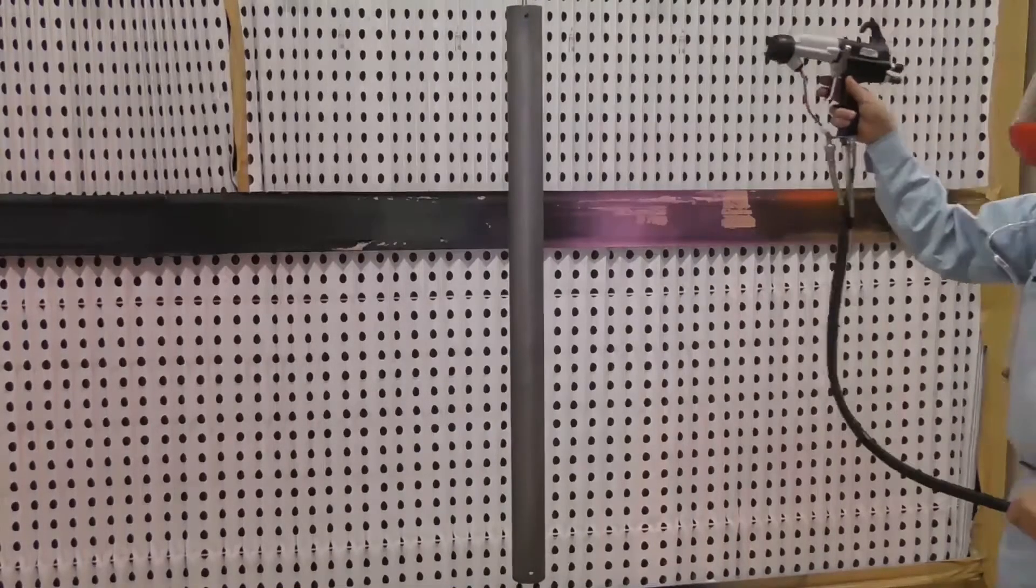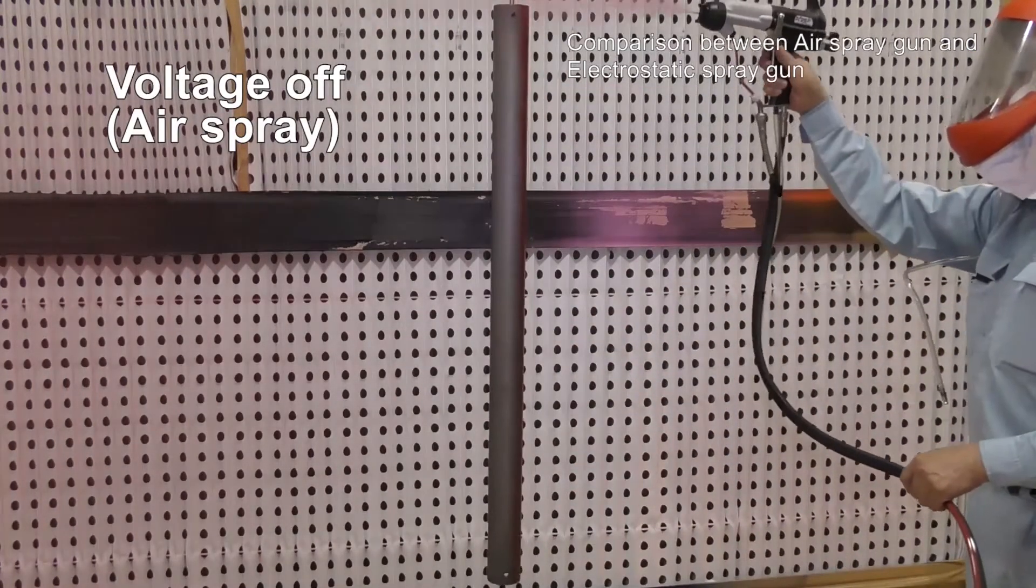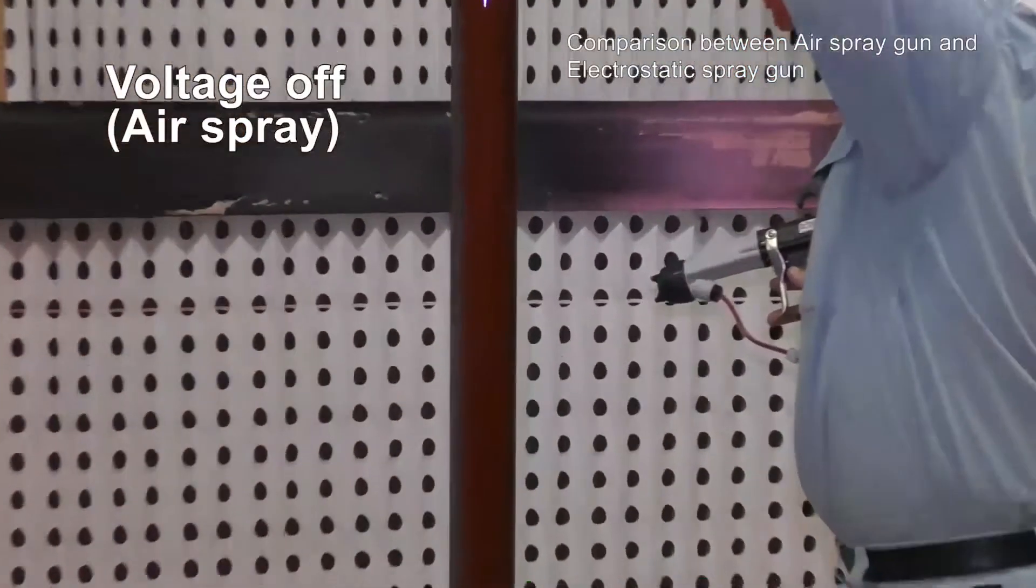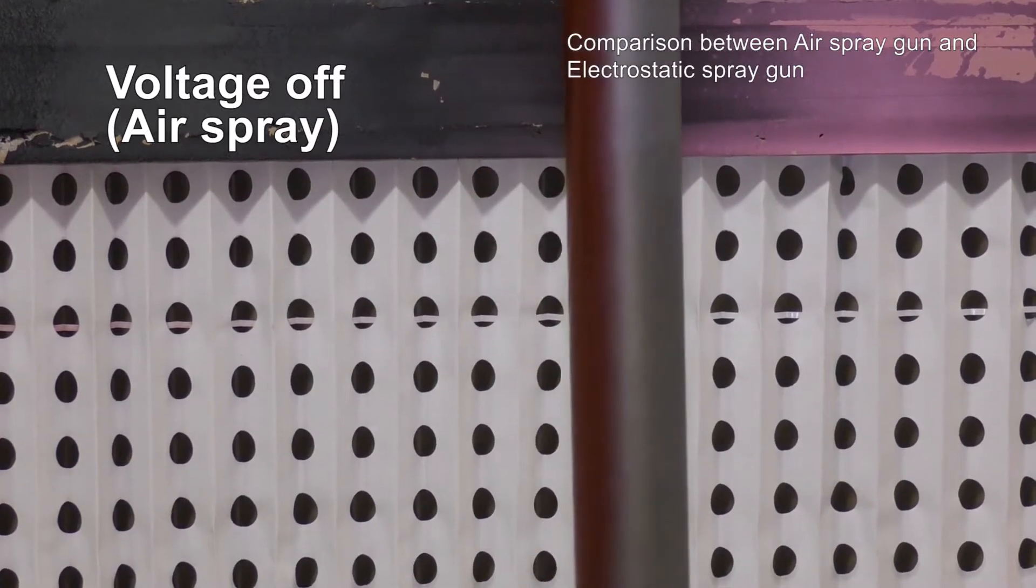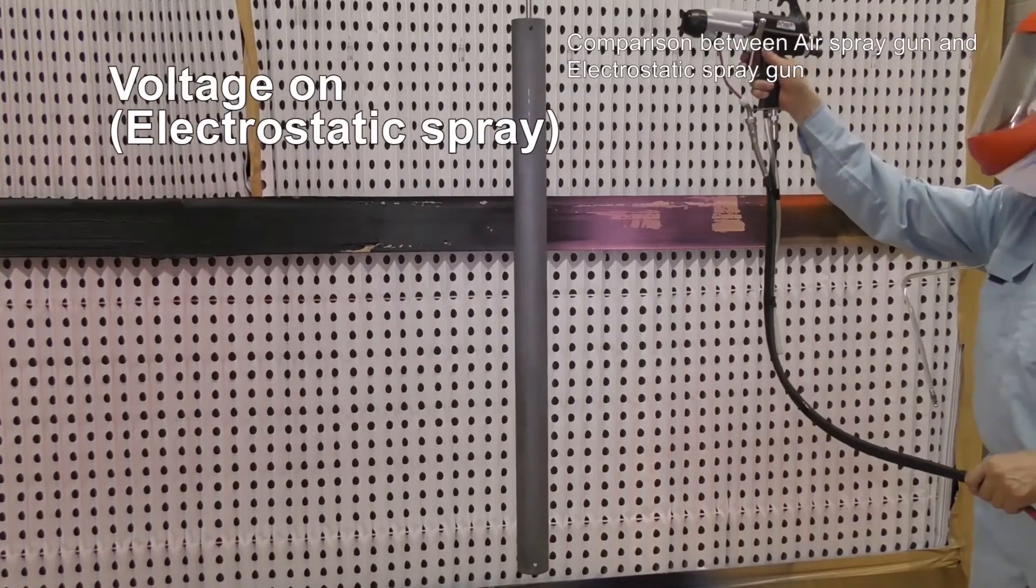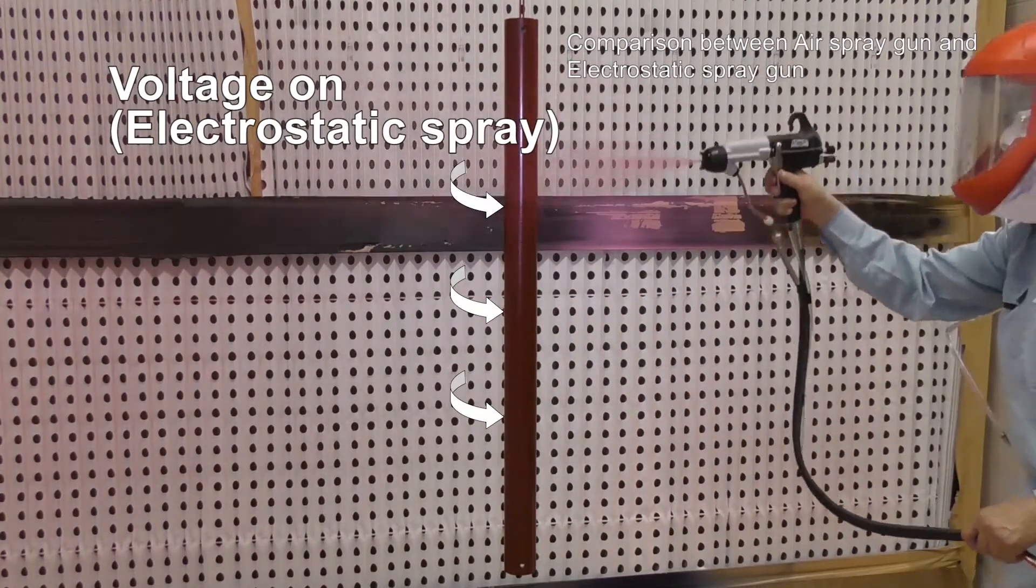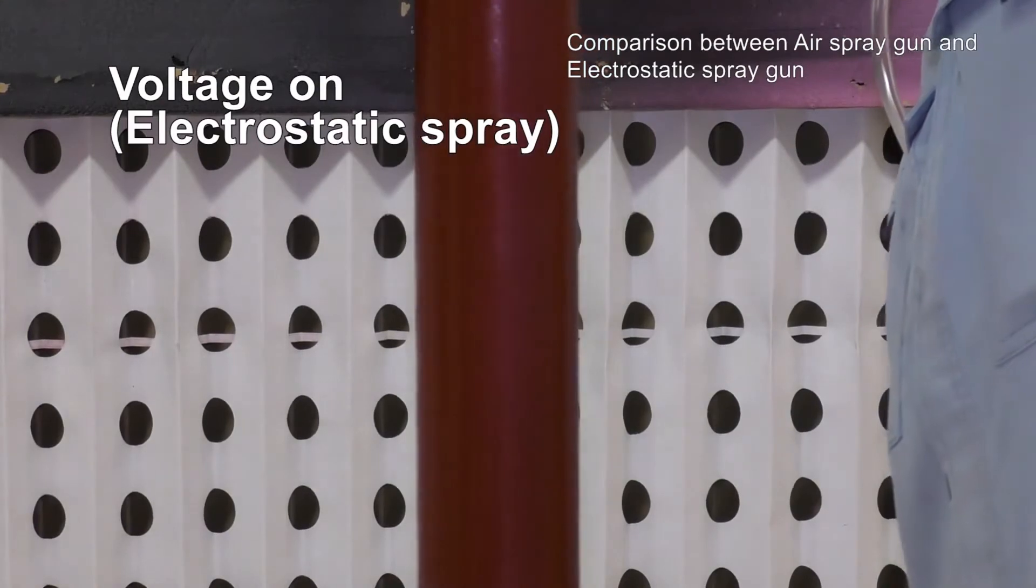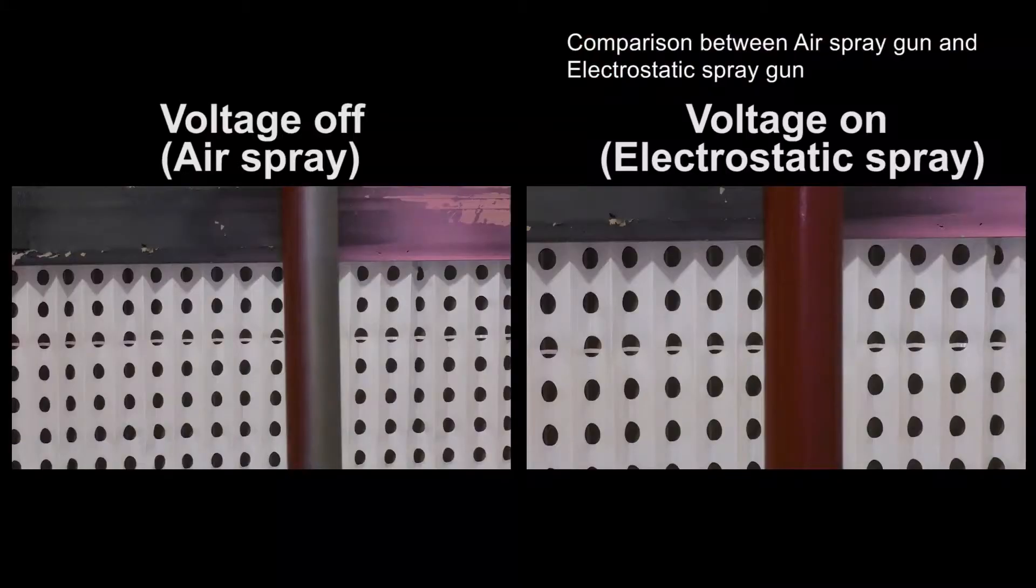Either electrostatic spray or air spray are attainable. With voltage off, RansFlex is actuated as an air spray gun. Let's spray with voltage off. The coating material is only applied on the front surface. Next, let's spray with voltage on. You can see the material is coated on all surfaces by the electrostatic effect. Here you can see the difference.